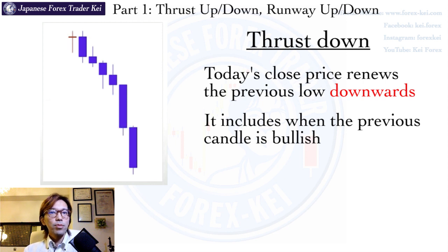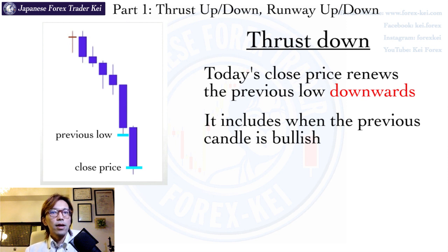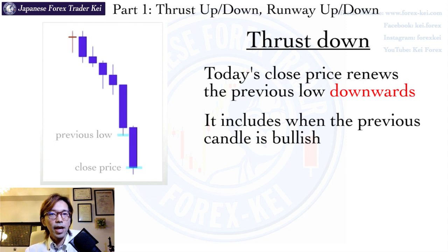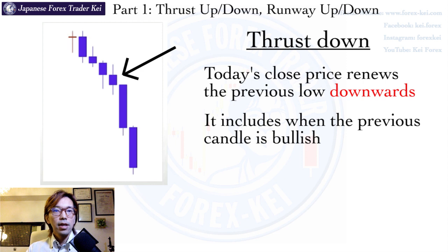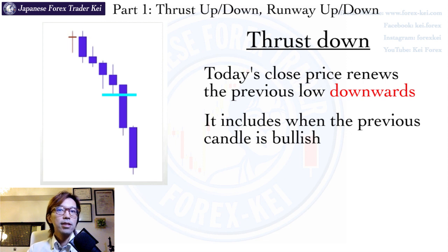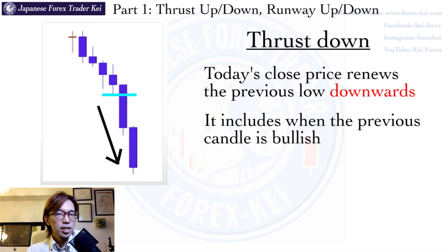When you see a candlestick with wicks pointing on both sides and a relatively smaller body while the market is in a bearish phase with these thrusts, you can draw a support line. When the market breaks this support line downwards, you can sell after the break and chase this bearish momentum as long as possible. I will talk about this strategy later in detail.